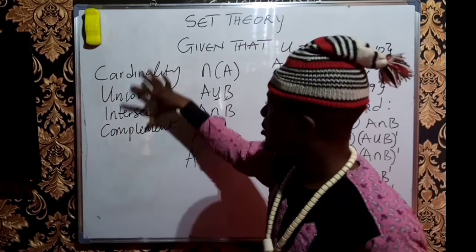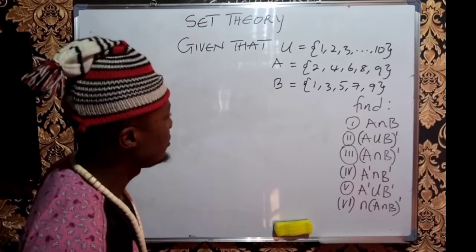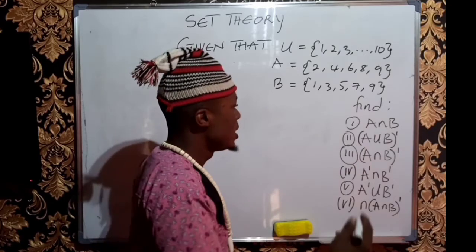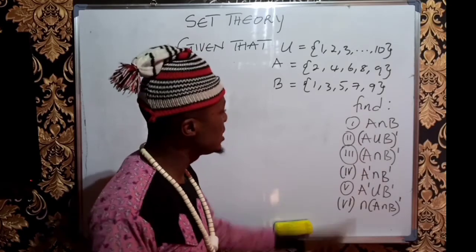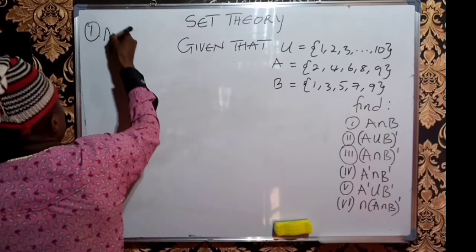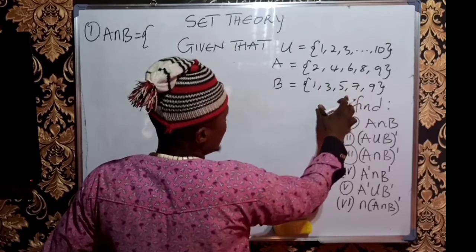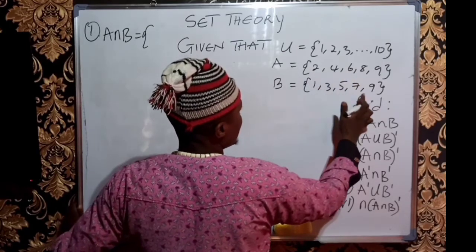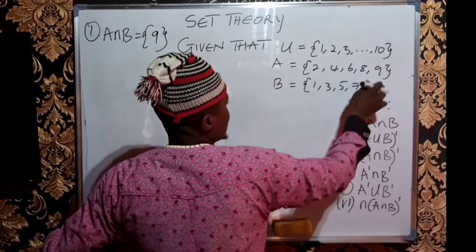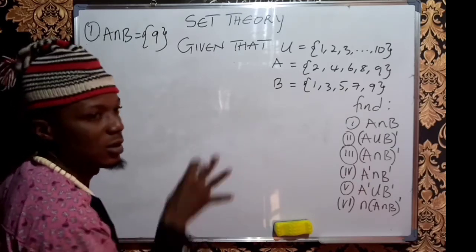Having learned the meaning of all these terms, let us apply them. Question one gives us the sets and asks us to get A ∩ B. A ∩ B simply means the element you can see in set A which is also in set B. I've gone through sets A and B and found that only element 9 is present in both sets. Since 9 is in both sets, 9 becomes A ∩ B — the connection between the two sets.